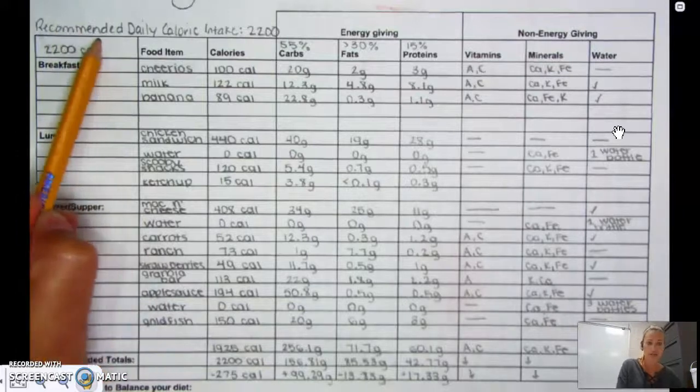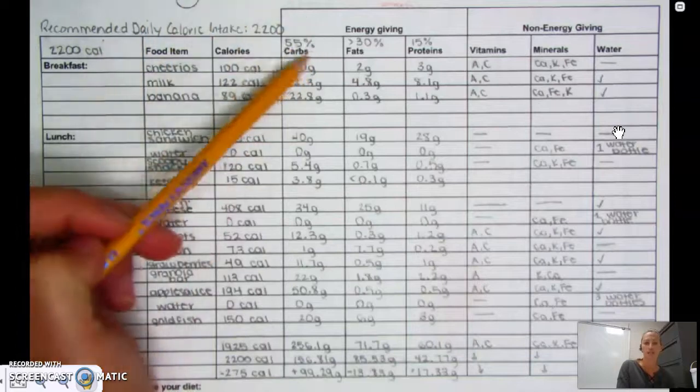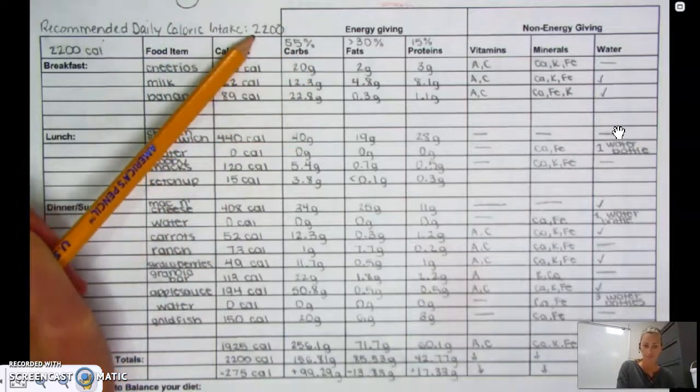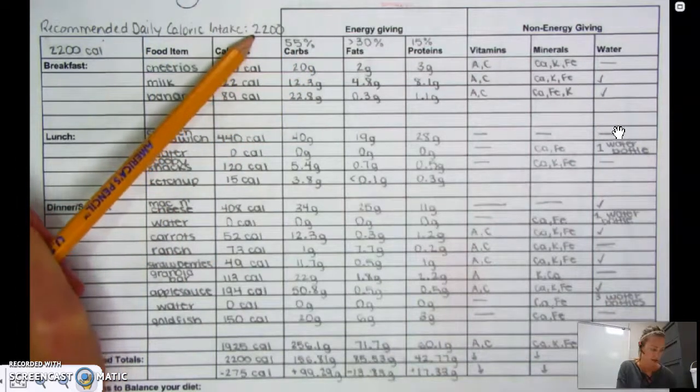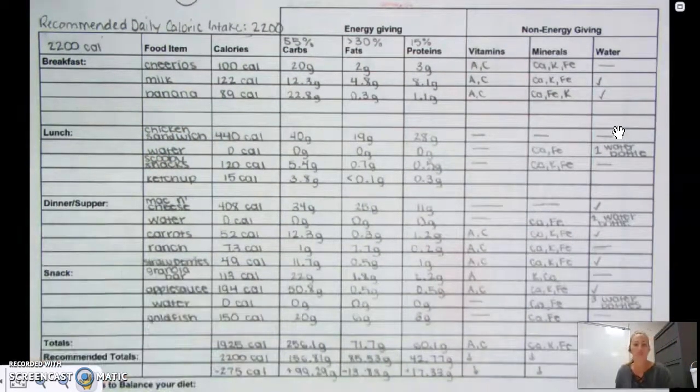That's going to be right up here on your chart here that you're going to fill out. Okay, this particular person needed 2,200 calories a day based on her, I believe, activity levels.